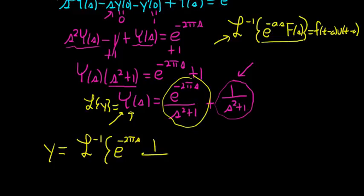It's going to be e to the negative 2π s times 1 over s squared plus 1 plus inverse Laplace of 1 over s squared plus 1. Okay, so first a couple things. Let's do some matching here.